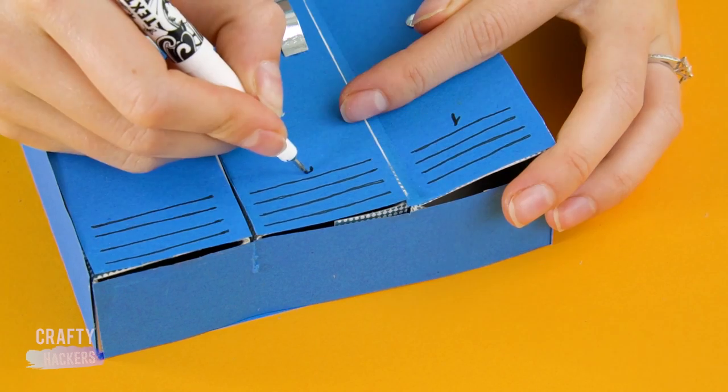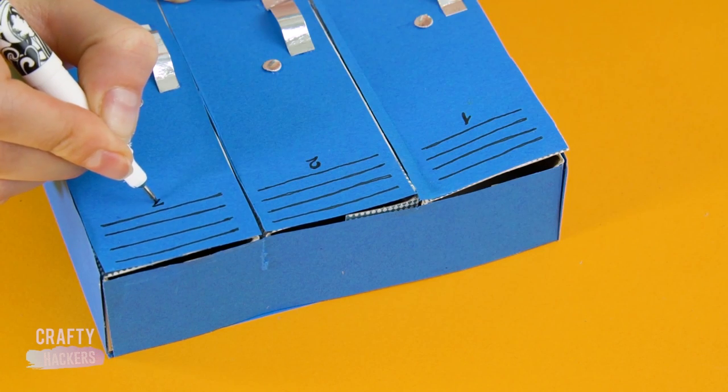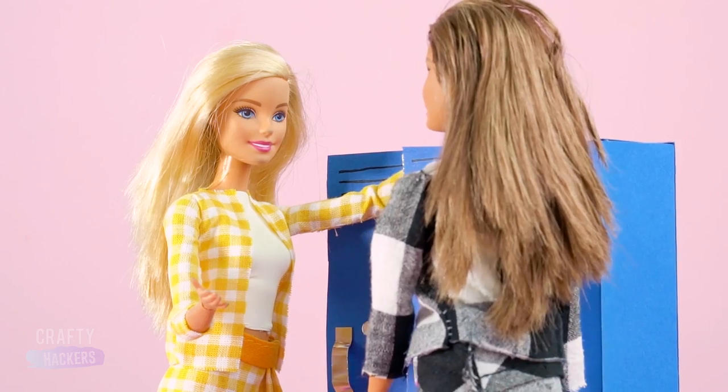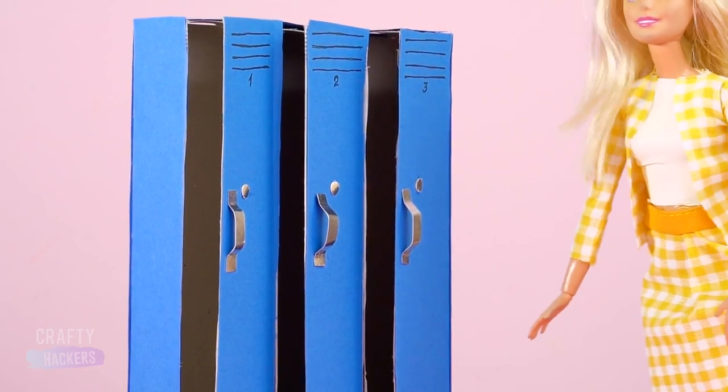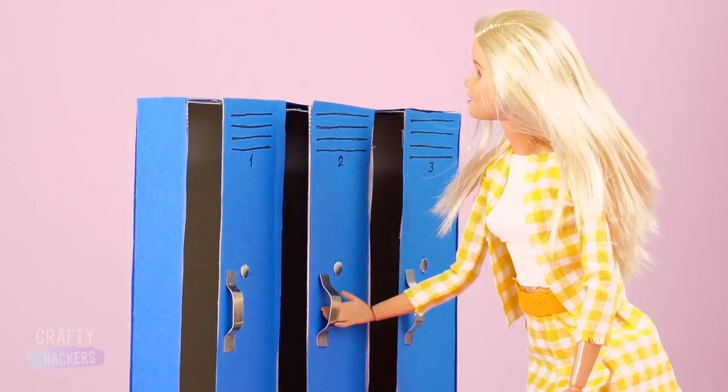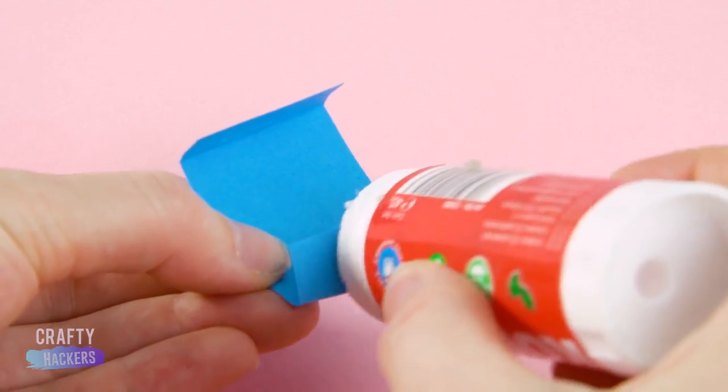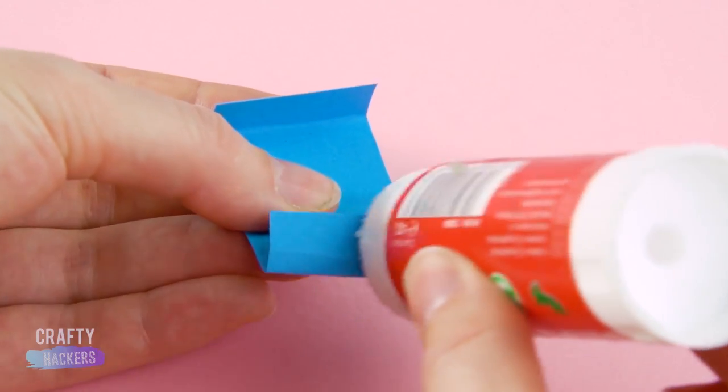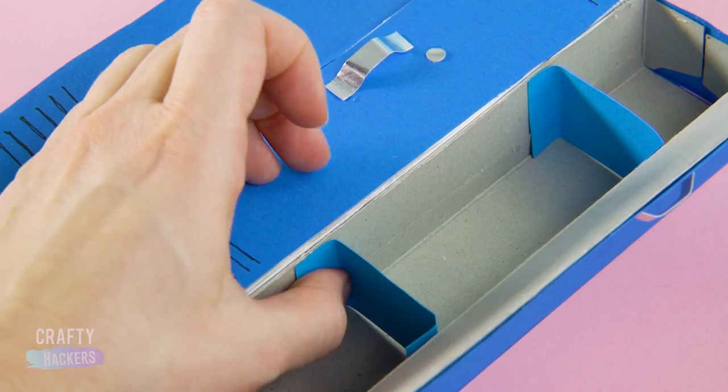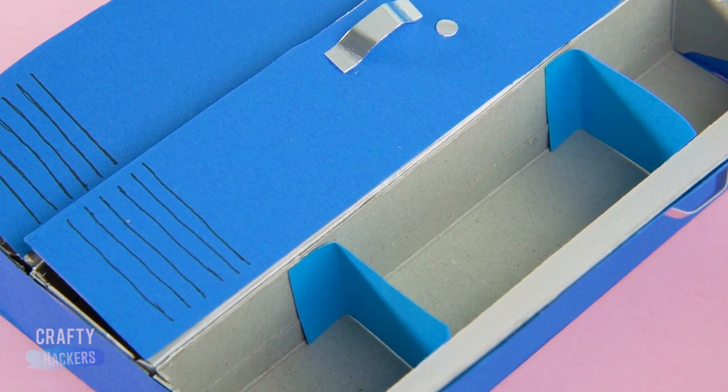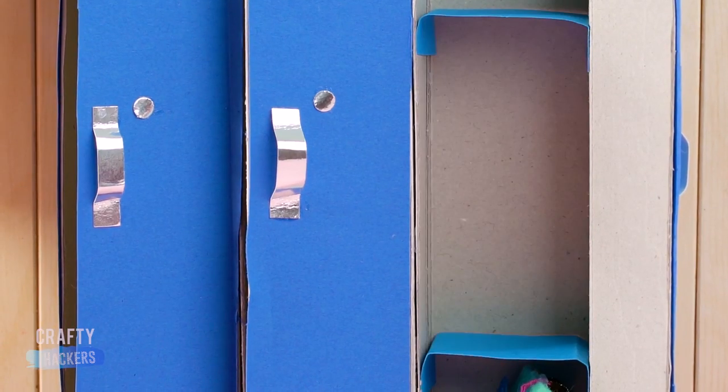Number the lockers so Barbie knows which one's hers. Hey girl, just grabbing some books from my locker. You can even add shelves with your sturdy blue construction paper. Just cut and fold to bits and glue them inside the locker. Looks like these students have everything they need for a successful school day.